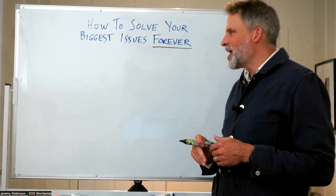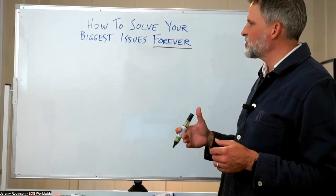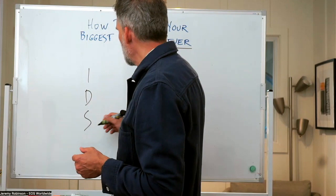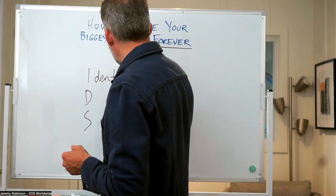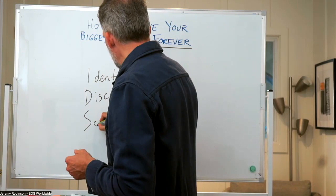All right. So the name of the EOS or Entrepreneurial Operating System tool that I want to share with you right now is called the Issues Solving Track or IDS for short. And IDS stands for identify, discuss, and solve.